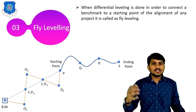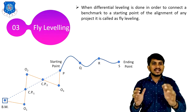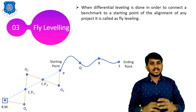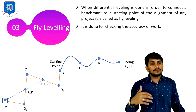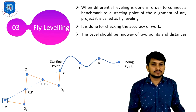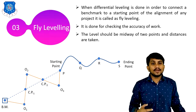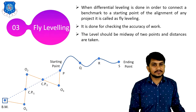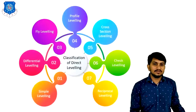When differential leveling is done in order to connect a benchmark to a starting point of the alignment of any project, it is called fly leveling. It is done for checking the accuracy of the work. The level should be midway between two points and distances are equal.